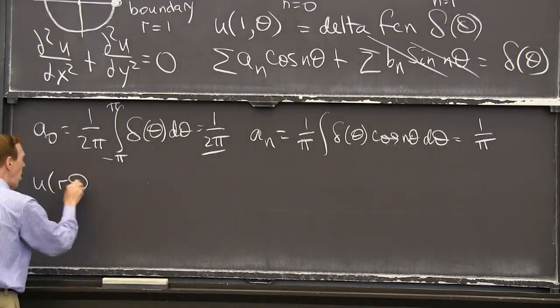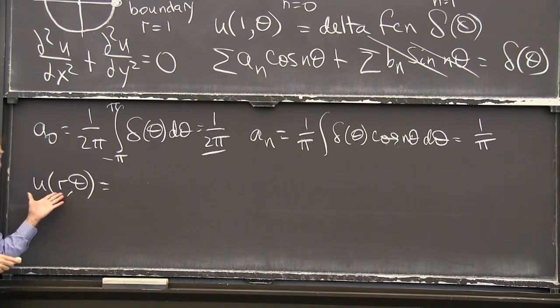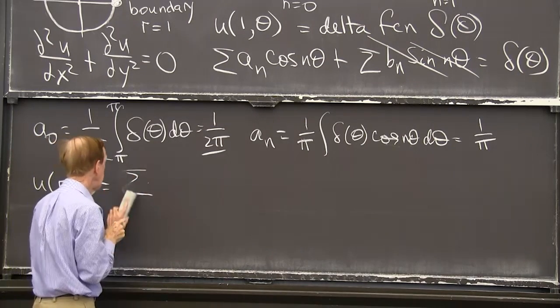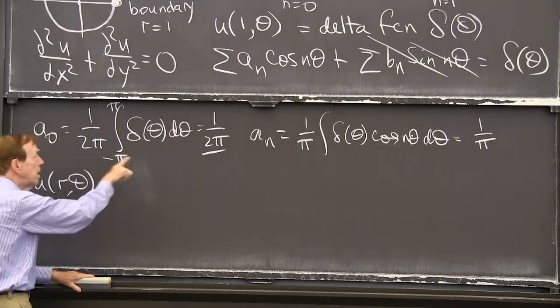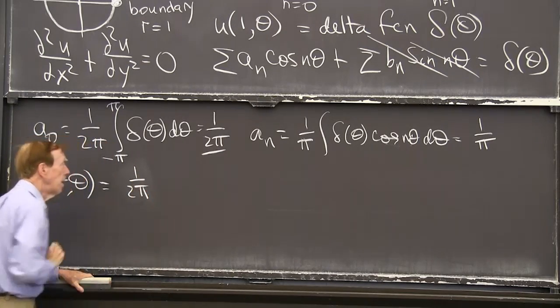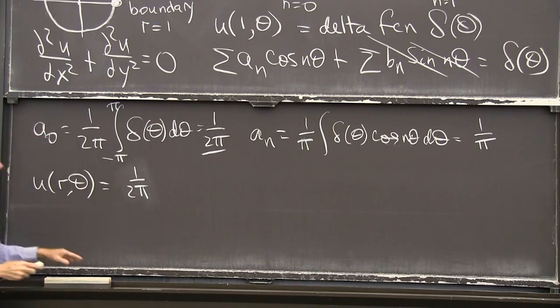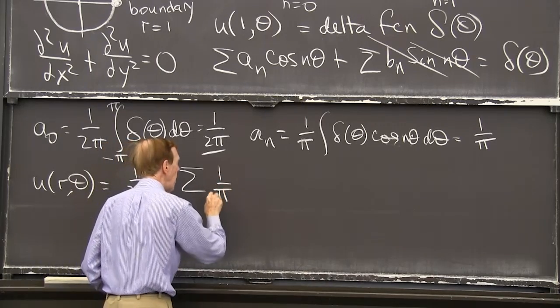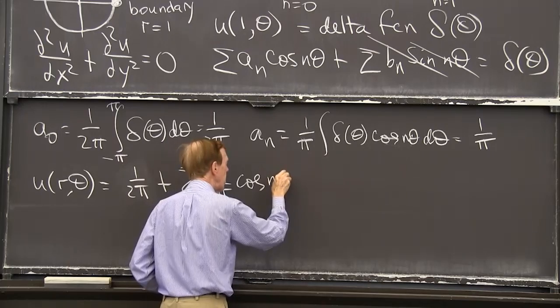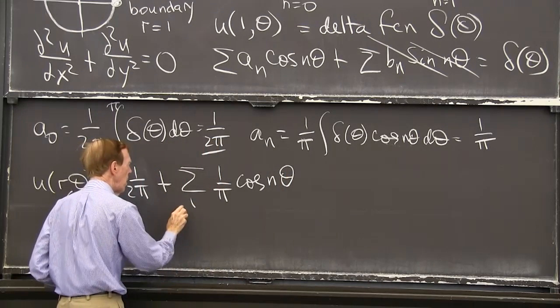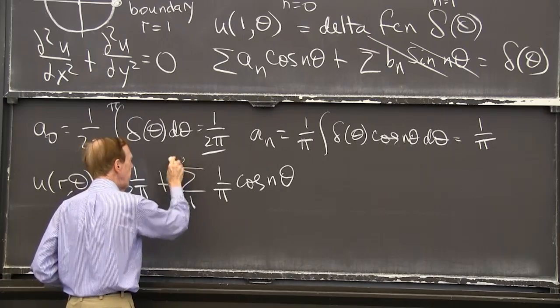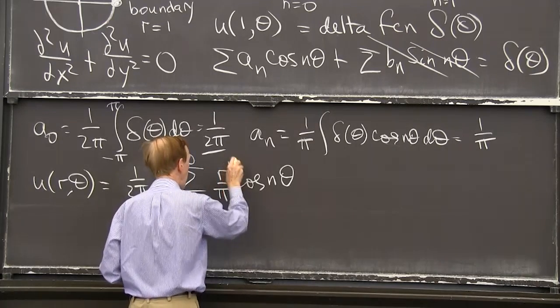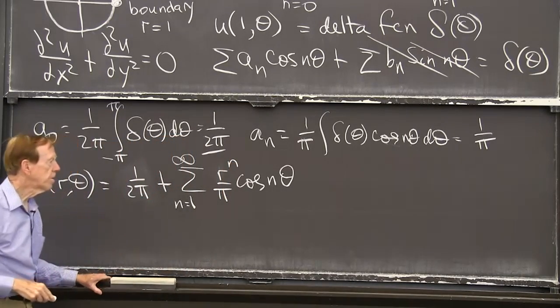The solution. Now I can put r back in the picture. It's a sum. Well, let me take the a_0 term. The a_0 is 1 over 2π. That's the constant. That's the average. Plus a sum of 1 over π's cos n theta from n equals 1 to infinity. And r to the n. So you see what happens.